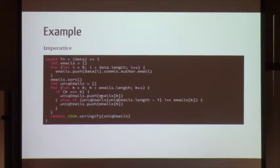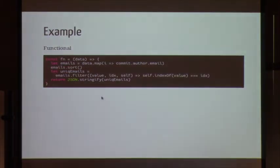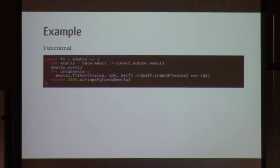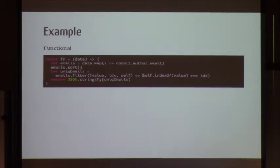With imperative style, we explicitly tell the computer: iterate over this, grab this, push it, sort it, run a unique-checking algorithm, and dump the list as JSON. With functional style, you say what needs to be done: map the data and give me the emails, sort them, run this filter. You give short tidbits and it goes and does all of it. After decades of software development, we'd hope for more abstractions like this. JavaScript is slowly heading that direction, especially with ES6.